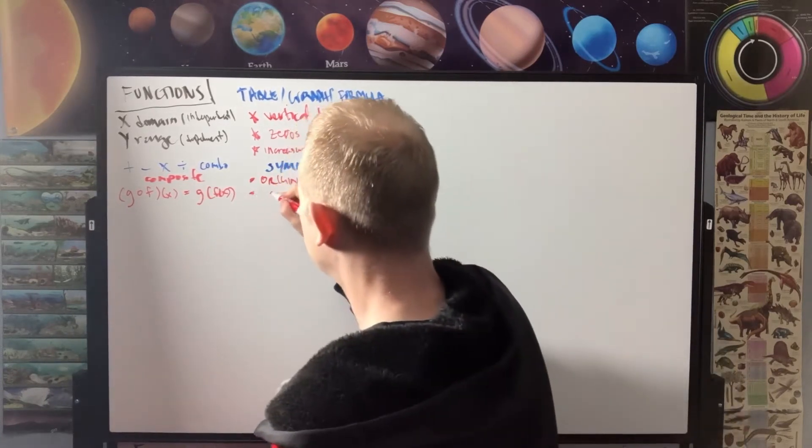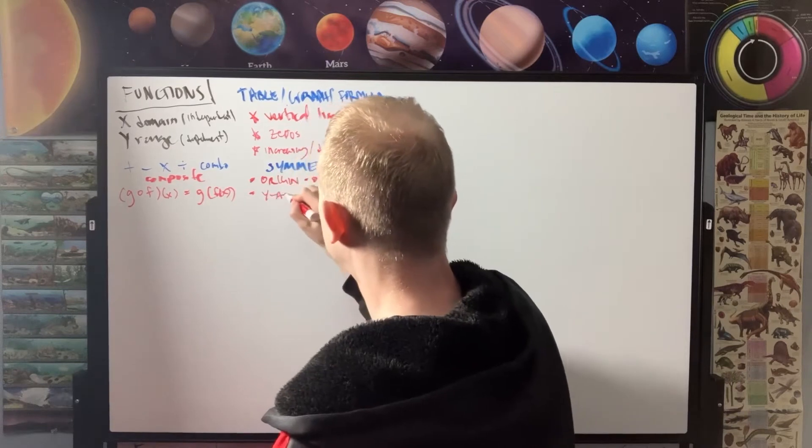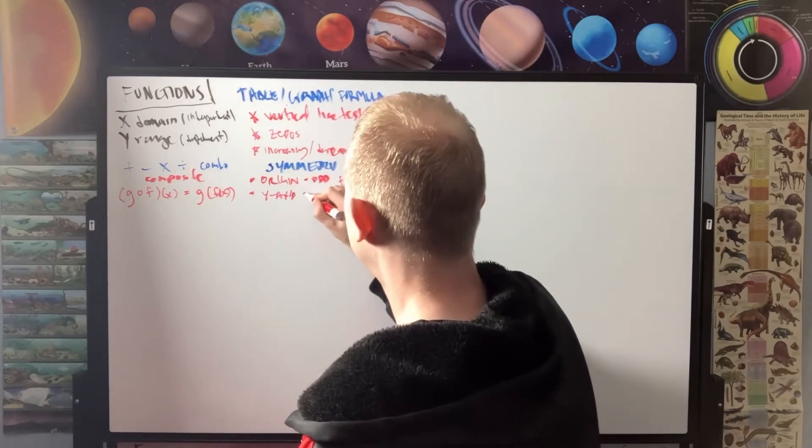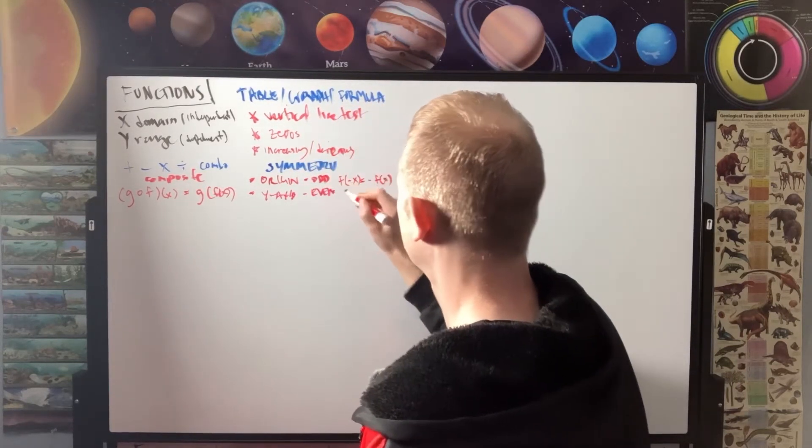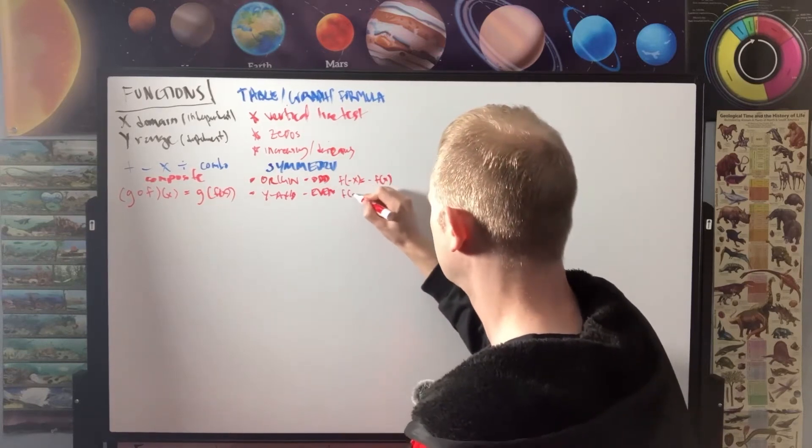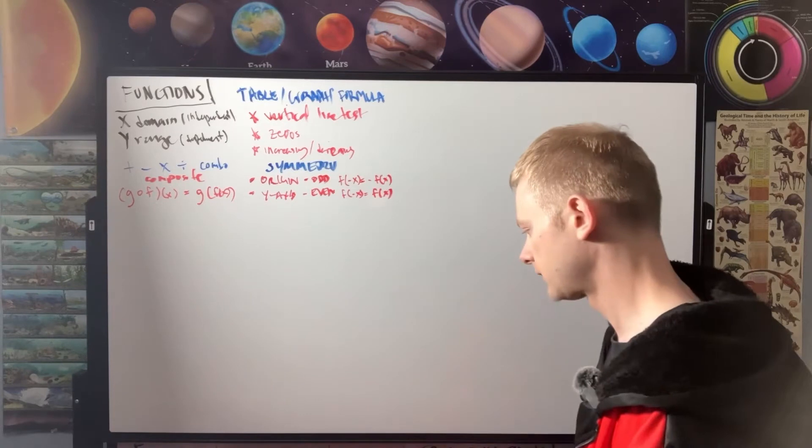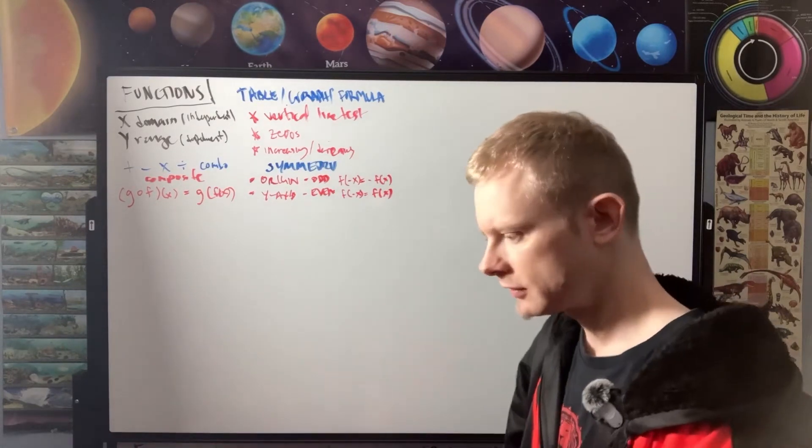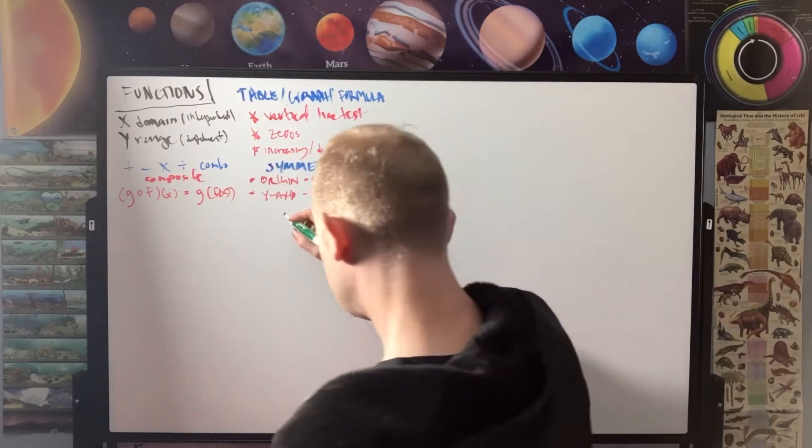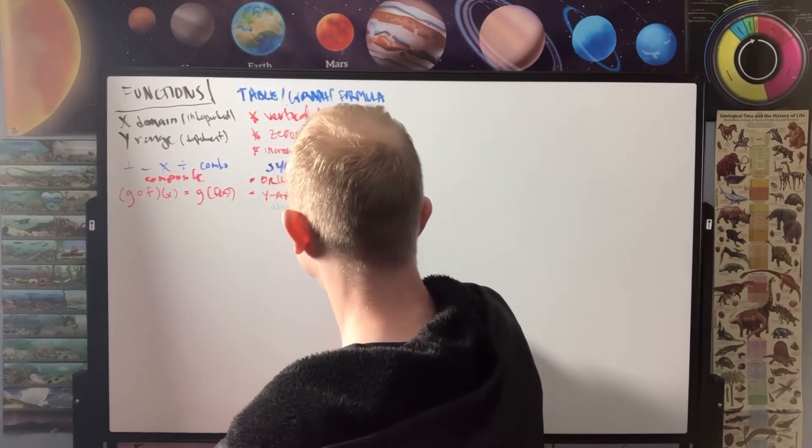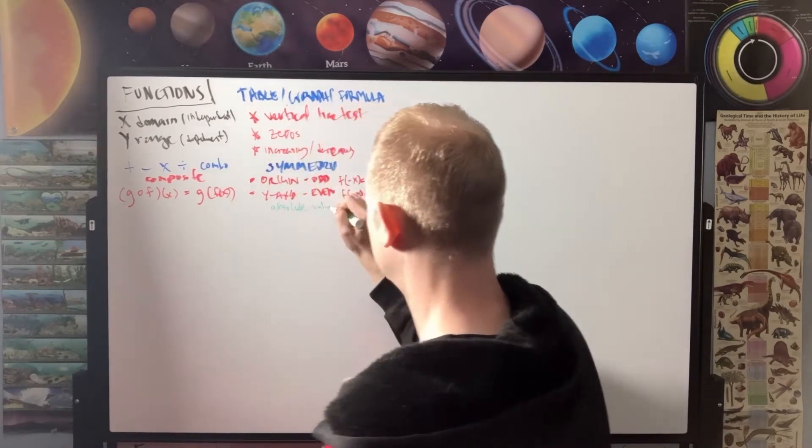And then if we have the symmetry about the Y axis, then that would be even. And that would be F negative X turns into F of X. And one of the most common even functions that we would see would be the absolute value function.